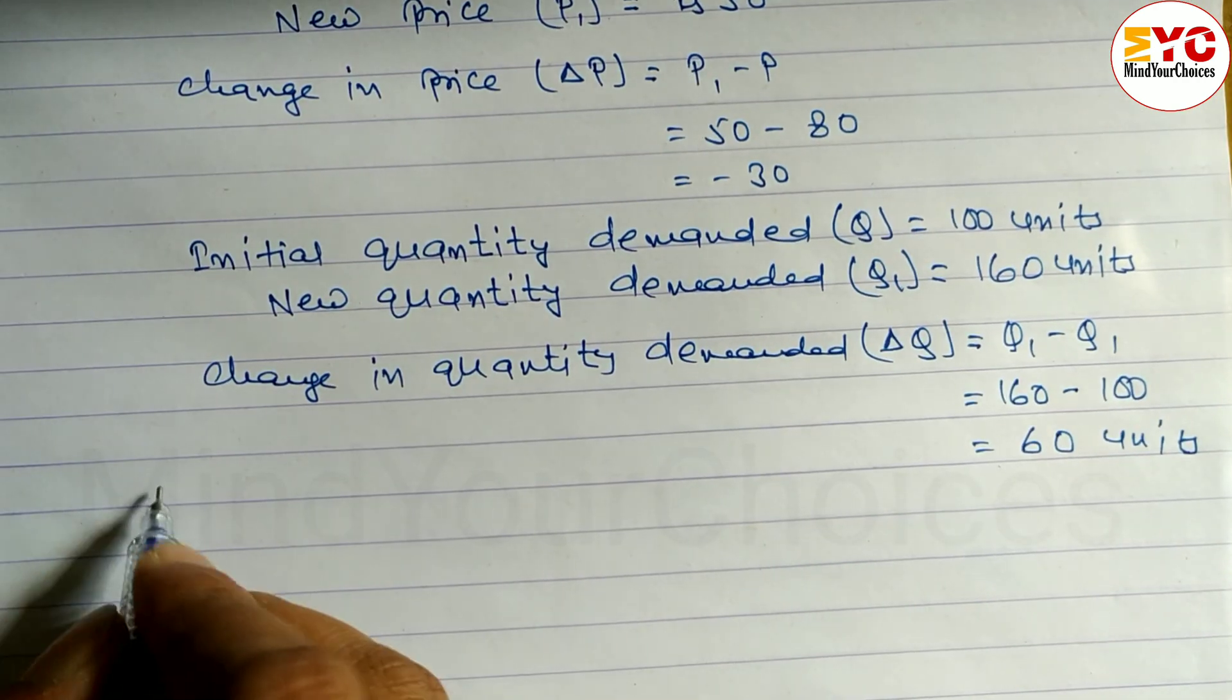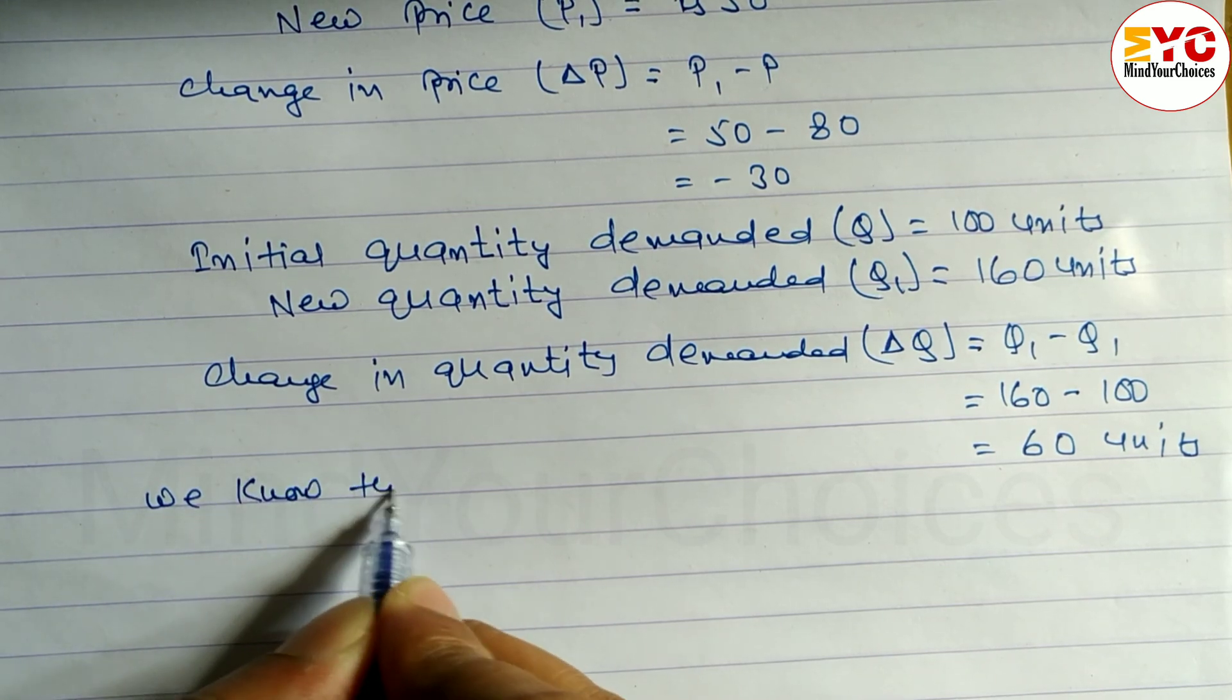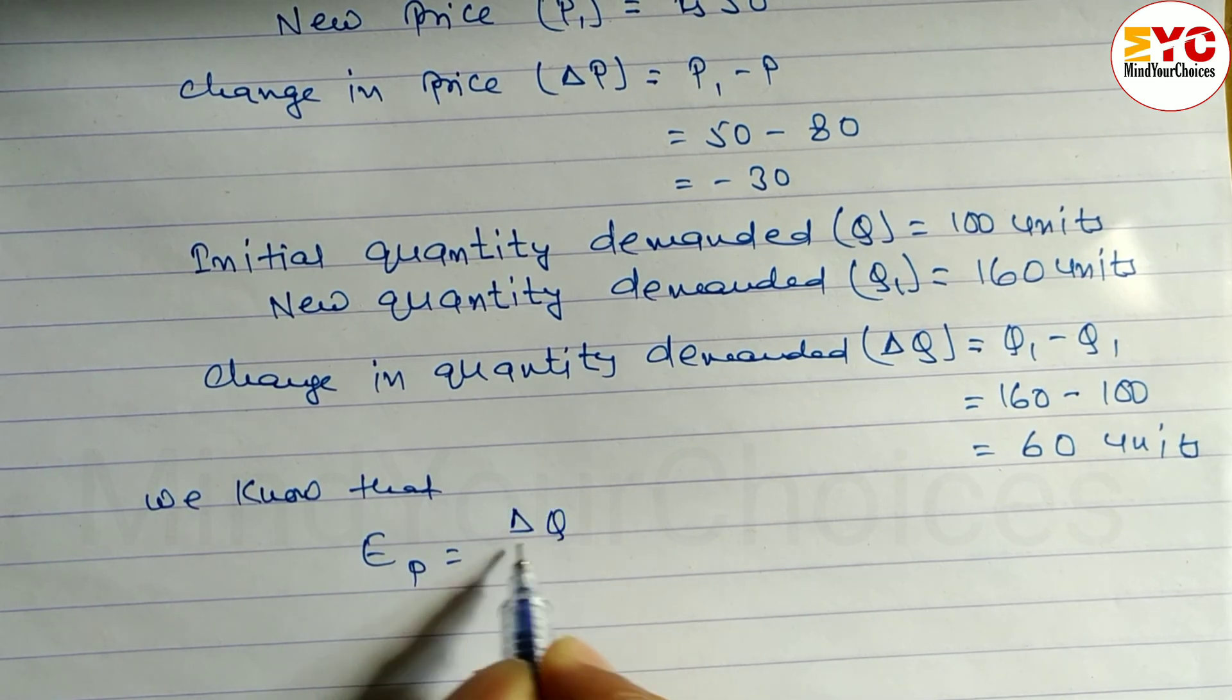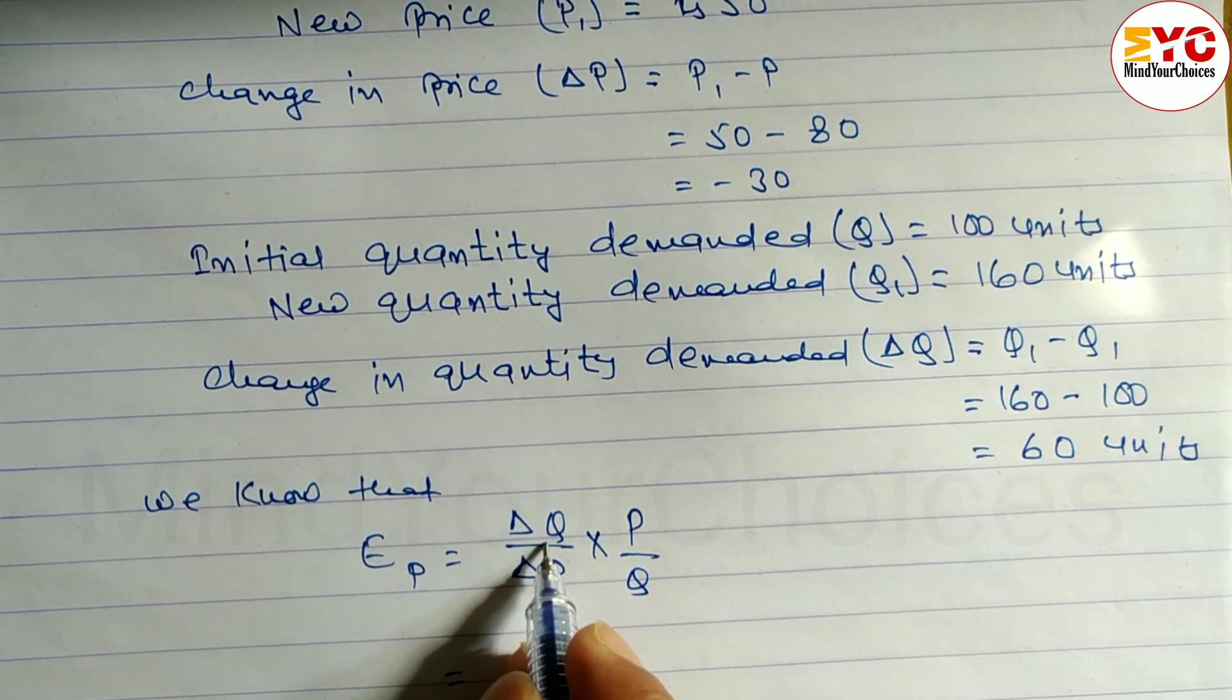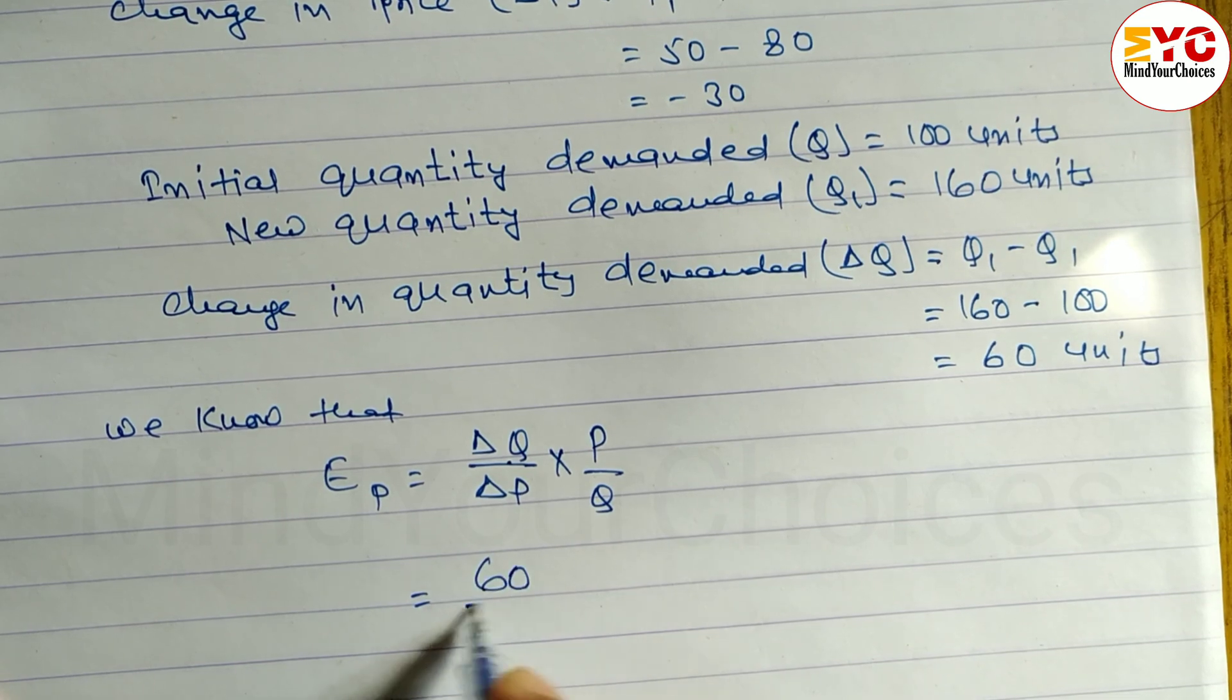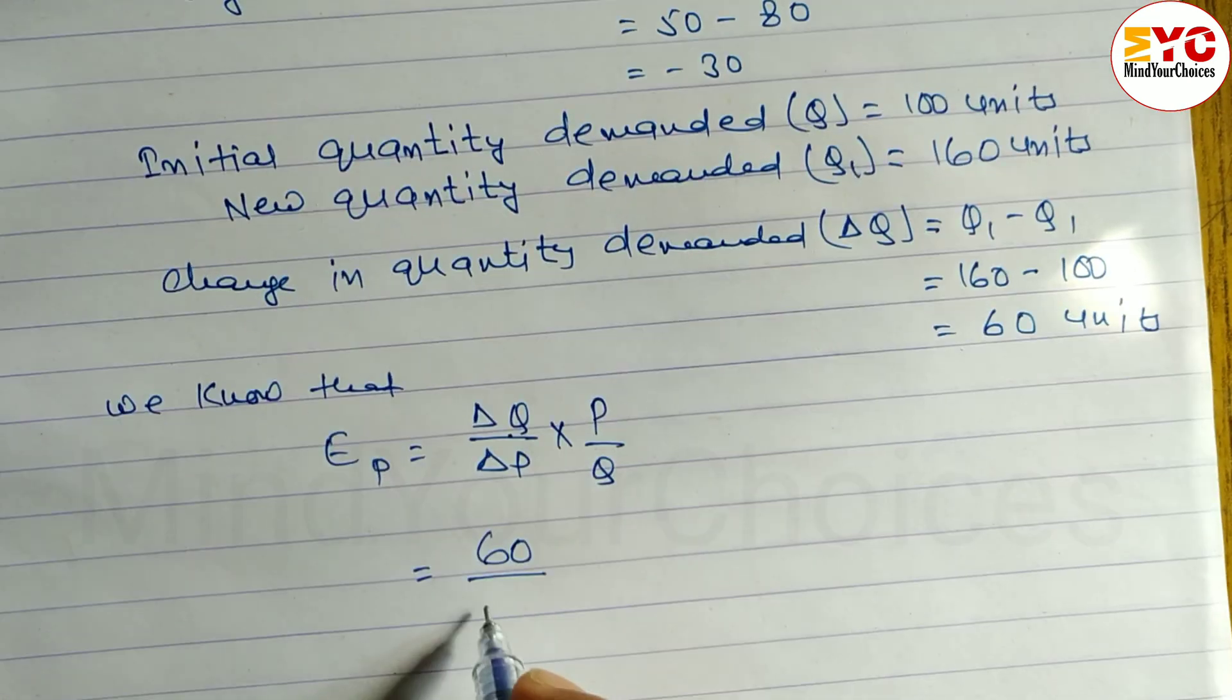Now we have to use the price elasticity of demand formula. We know that price elasticity of demand Ep is equal to ΔQ by ΔP into P by Q. Change in quantity demanded is 60, so 60 divided by change in price which is minus 30.